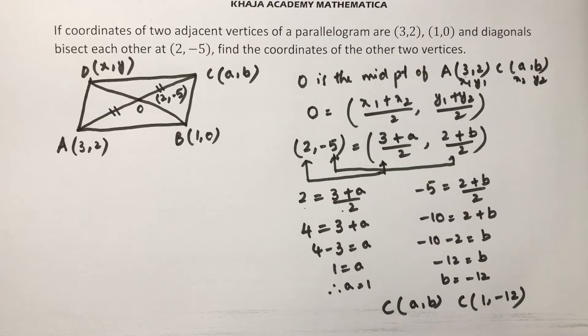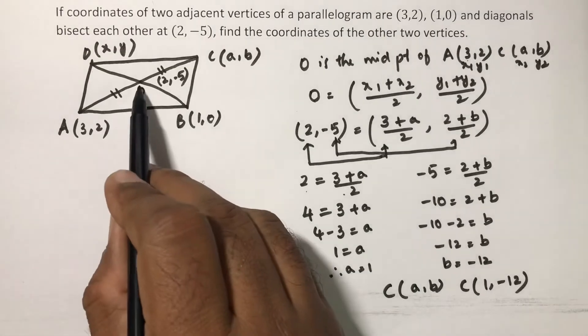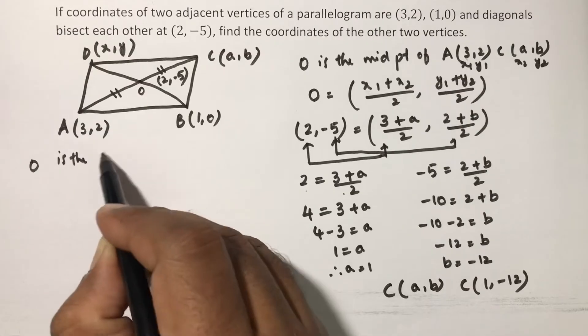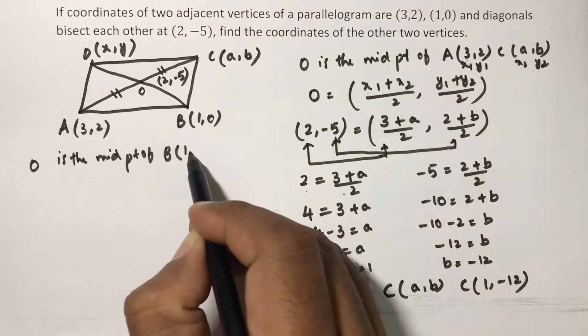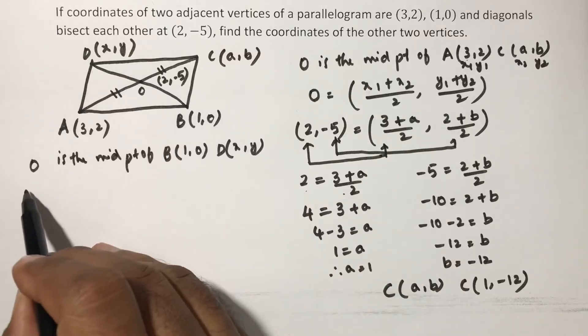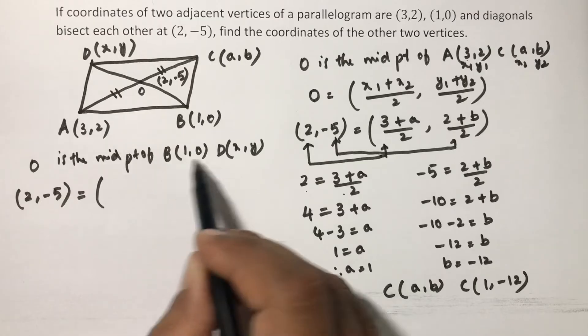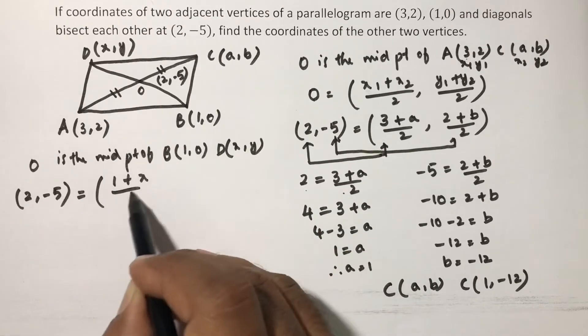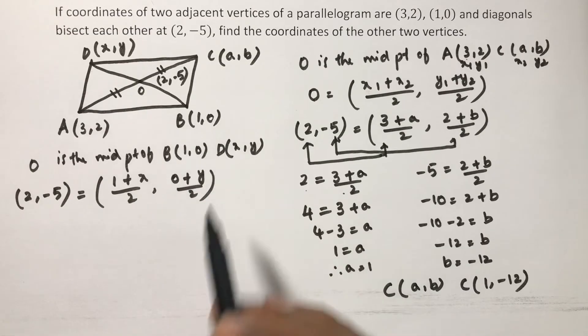In the same way, if you calculate, now O is the midpoint of BD. O is the midpoint of B which is (1,0), D is (x,y). So O value is like (2,-5). Midpoint of B, x₁+x₂ by 2, (0+y)/2, y₁+y₂ by 2.